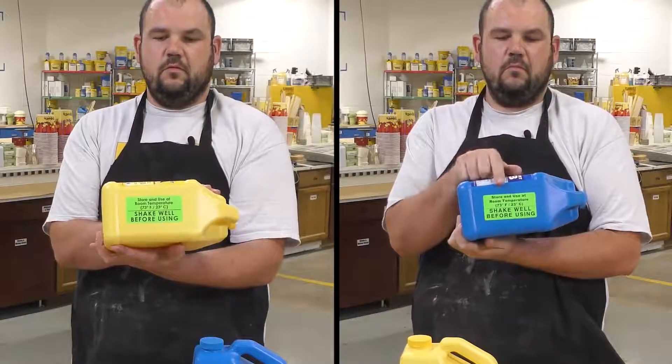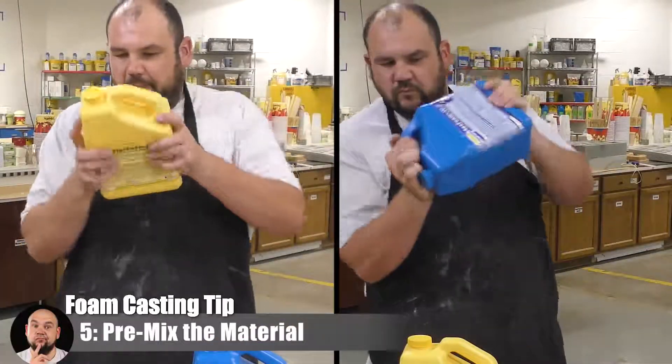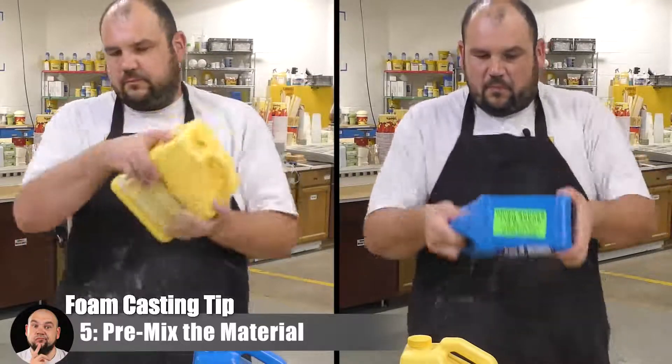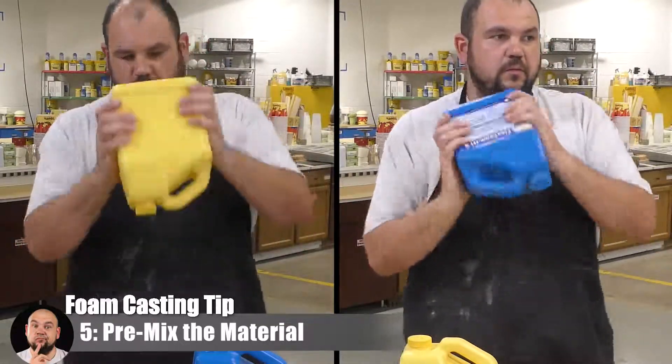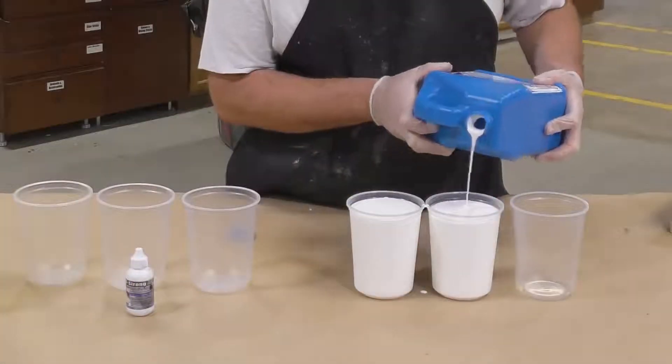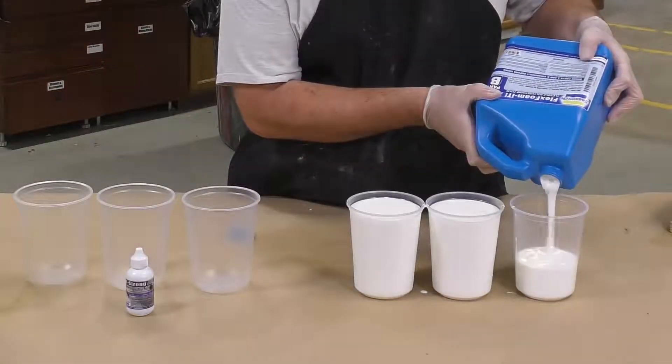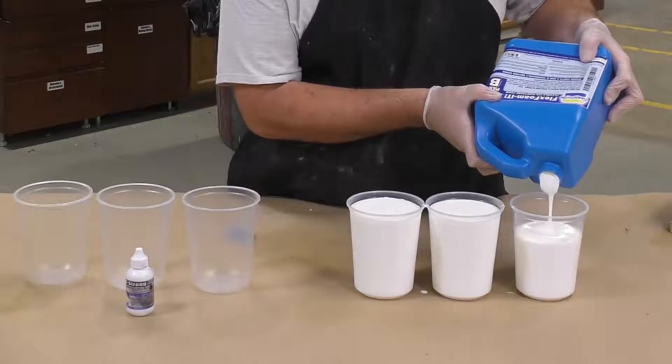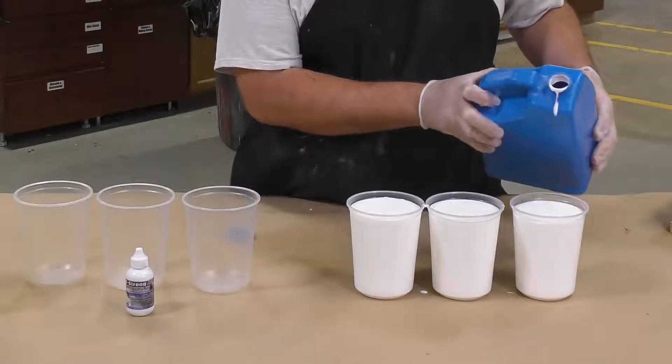It's really important that we pre-mix the two components separately before combining them together. The part A and part B should be mixed thoroughly before it's dispensed out of the original containers, and this should be done every time before you go to use the product. It doesn't matter if you mixed it an hour ago and then set it aside, you want to give it a quick mix one more time before you actually go to use it.